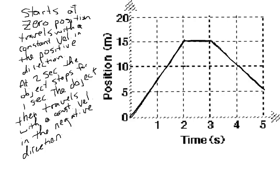Next we'd like to find out exactly how fast this object is traveling. We're going to look at the slope and figure out its value. Looking at the rise and run of the first segment, starting from a zero position it goes out to 15 meters — so we have a rise of 15 meters. And if we look at the run, that 15 meters of position change is happening over a 2-second time interval. So with a 15-meter rise over a 2-second run, we have a velocity of 7.5 meters per second.